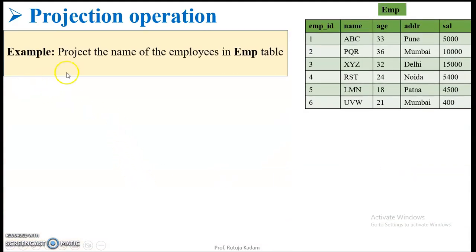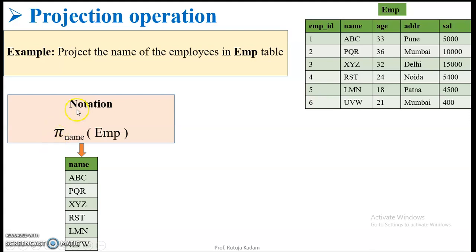Let us take one example. I want to project the name of the employees in the employee table. The notation will be the projection operation symbol PI, with name in the attribute list and the relation name employee. It will display the entire list of employee names.